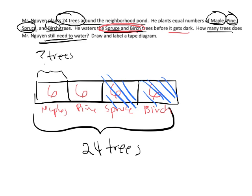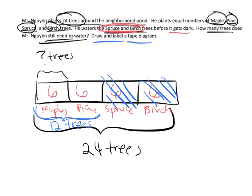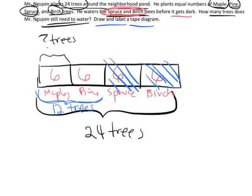So the question is, how many does he still need to water? That would be these two groups right here. So he still needs to water 12 trees. So that's our answer, that he still needs to water 12 trees. We've drawn it, we've labeled it, it's all looking good. If we wanted to try and write that as an equation, it doesn't ask us to, but we could. We could say, well, 24 divided by four equals six.